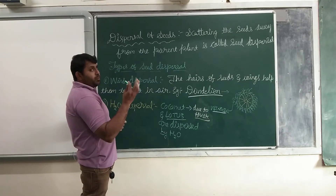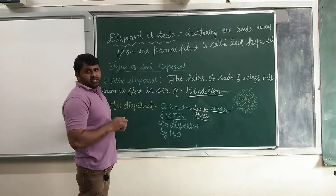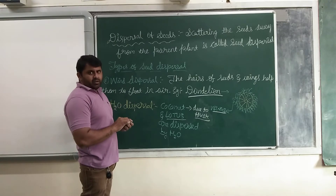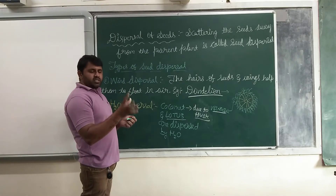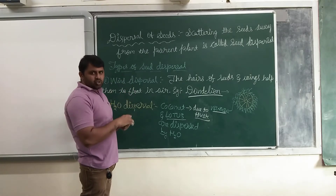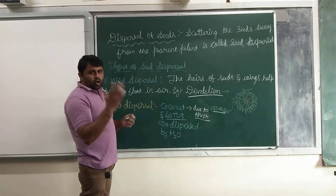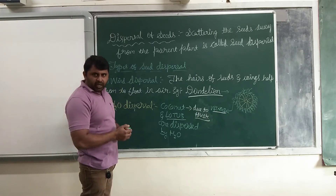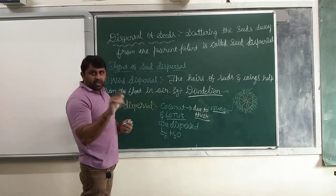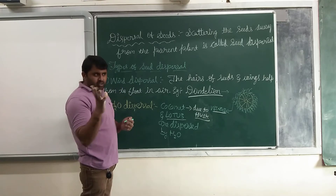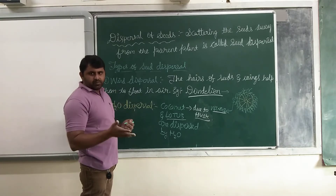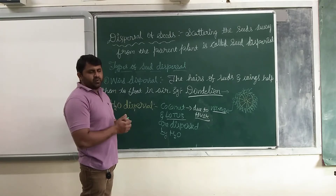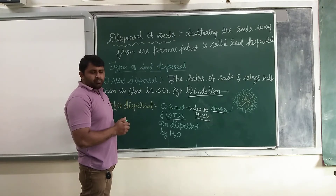Reproduction takes place with the help of the seed. When the seed is sowed in the soil, the soil contains NPK — the nutrition value. N stands for nitrogen, P stands for phosphorus, K stands for potassium.